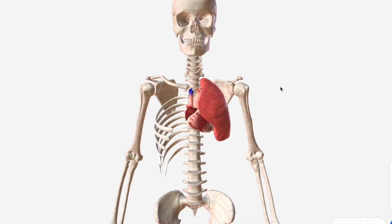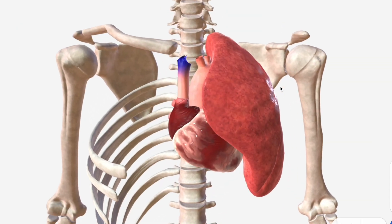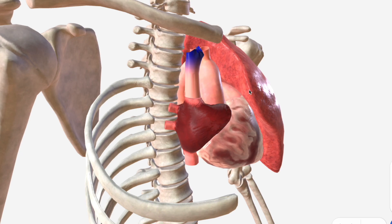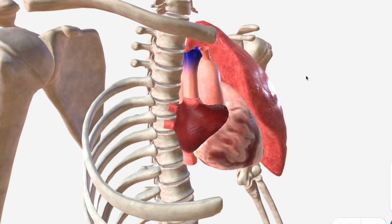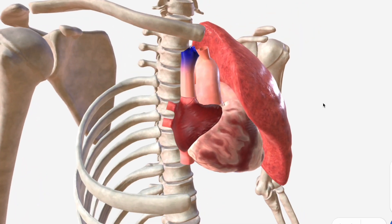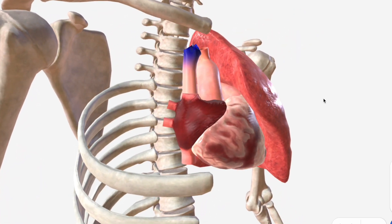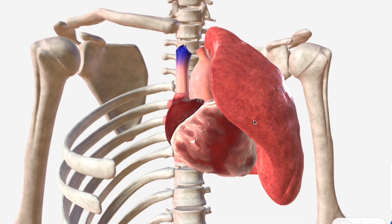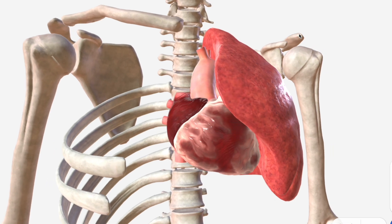Before we move on, we'll speak briefly about the relations of the ascending aorta. Anteriorly, we have the left lung, which courses around to the lateral aspect of the ascending aorta as well. On the right-hand side — the anatomical right of the ascending aorta — we have the superior vena cava.